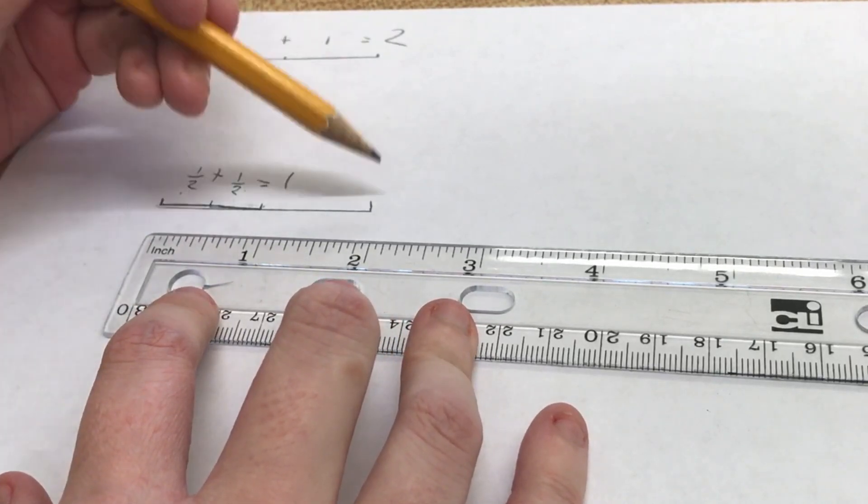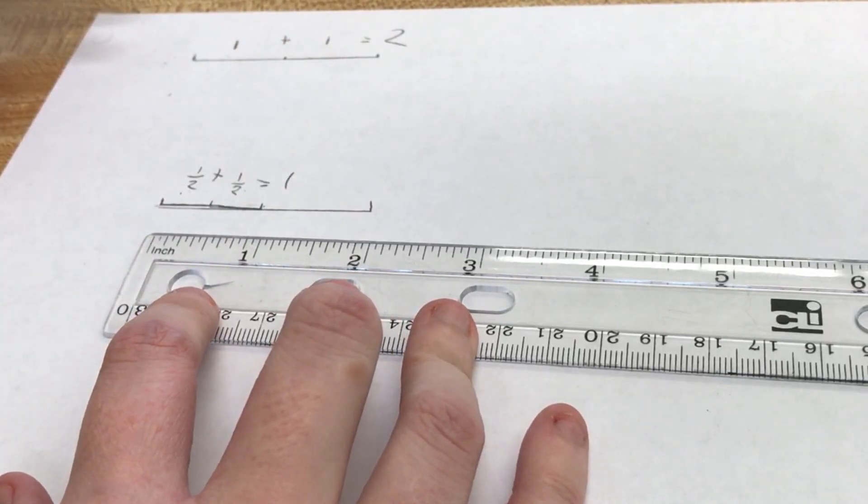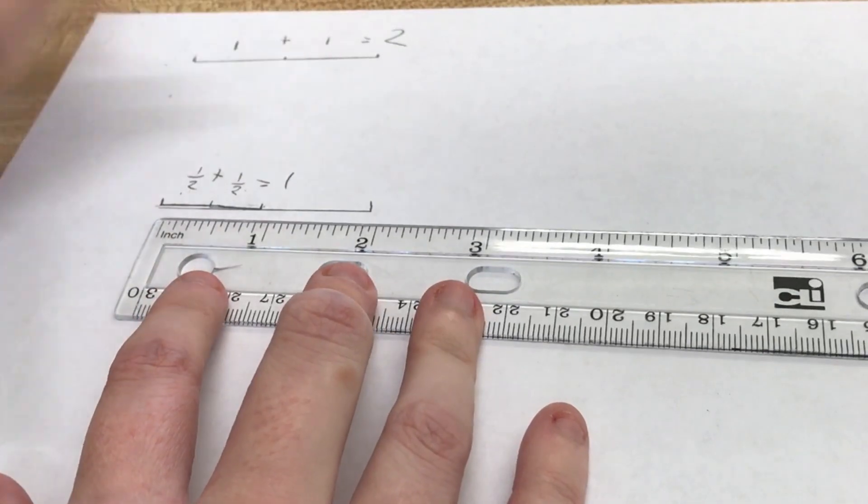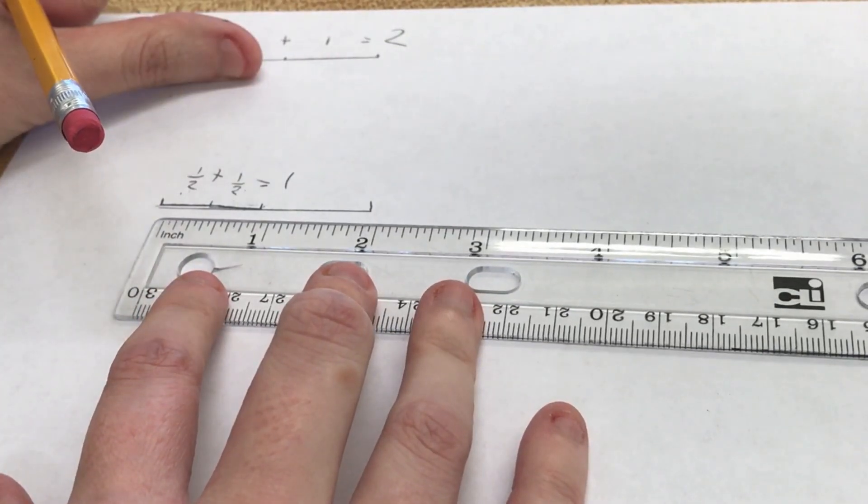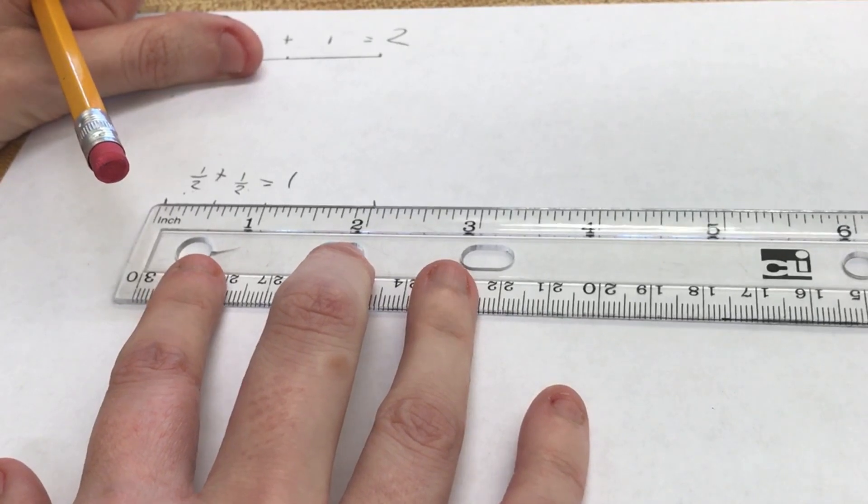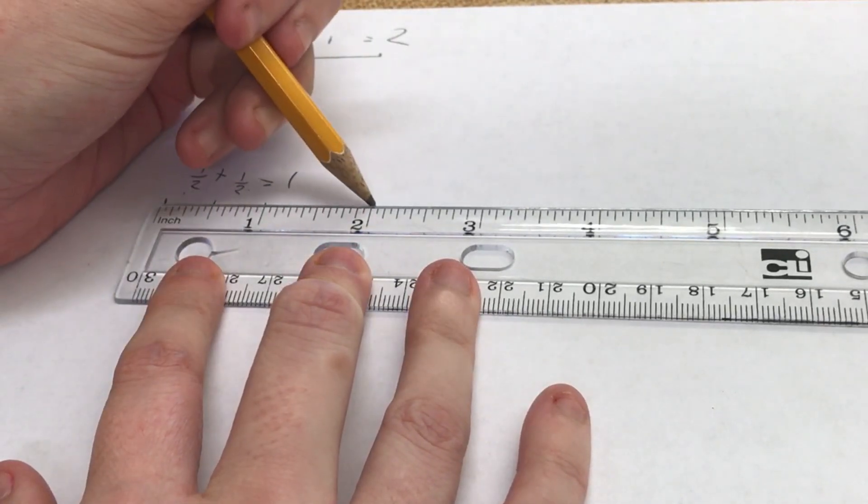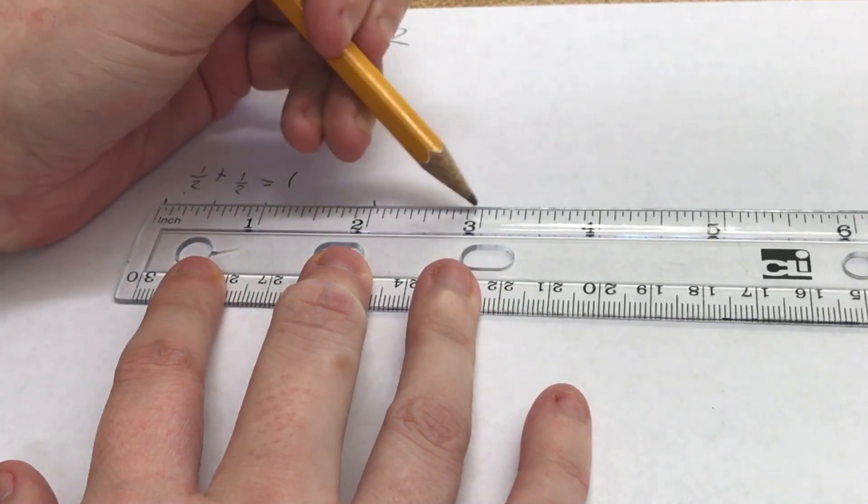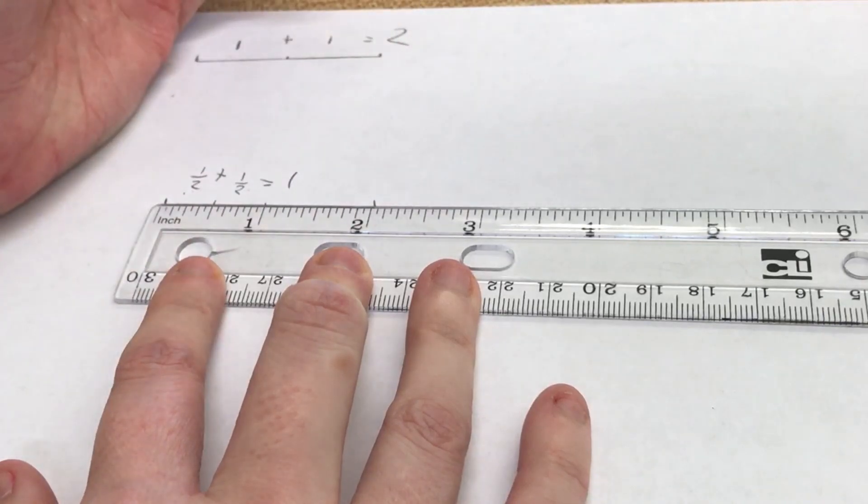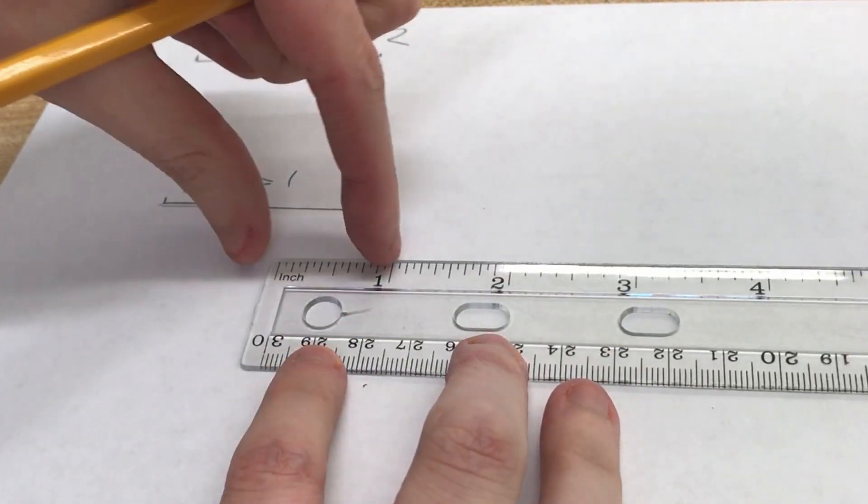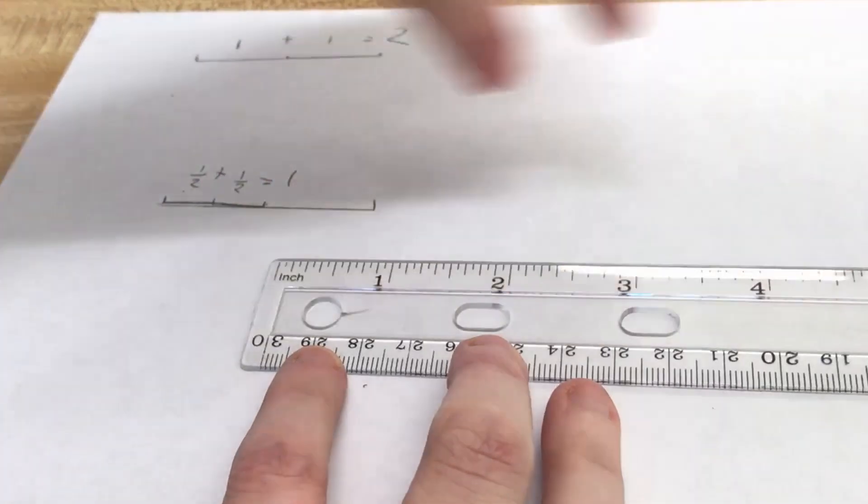What if I want this to be three inches? I have two options. I could either line this back up and draw a line from the zero all the way to the three. Or, just to prove my point that all of this equals one inch...